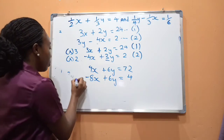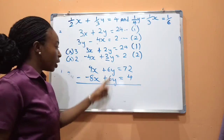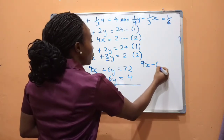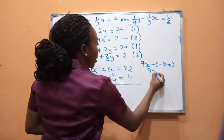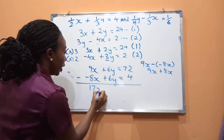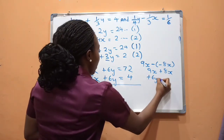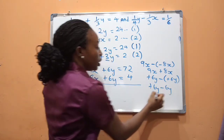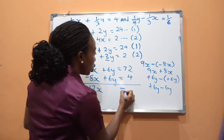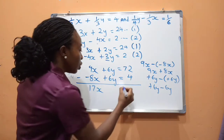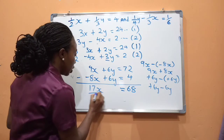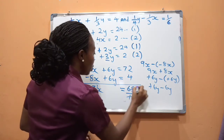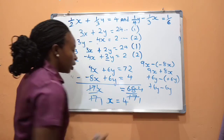We use the minus sign between the two equations to eliminate the y terms: 9x − (−8x) = 9x + 8x = 17x, and 6y − 6y = 0. On the right-hand side: 72 − 4 = 68. So 17x = 68. Dividing both sides by 17 gives x = 4.